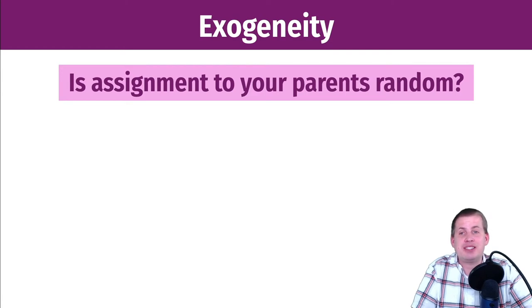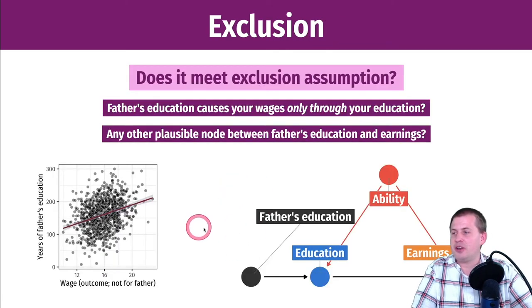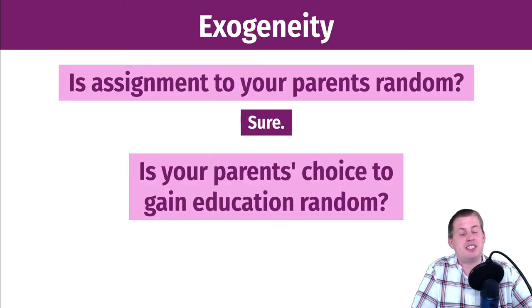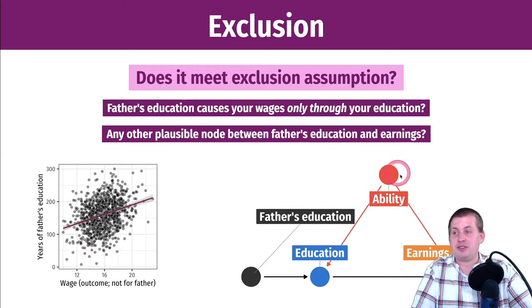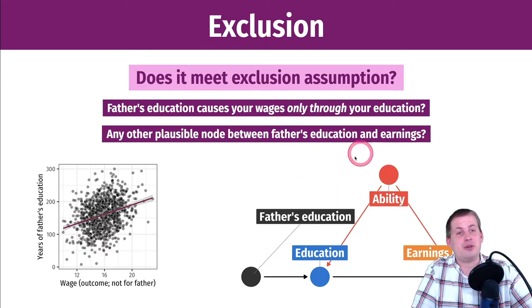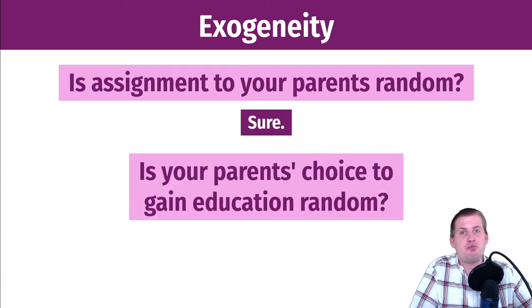Finally, we need to check exogeneity: is assignment to your parents random? You didn't have any choice over who your parents were, so that's outside your control. But in the DAG, there are probably many unmeasured nodes leading into father's education — the city you live in, the year you were born, the year your father was born — things you can't measure that affect father's education. That breaks exogeneity, but we'll pretend it works, because twenty years ago people pretended it works.